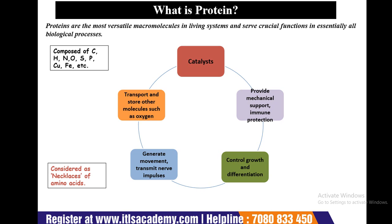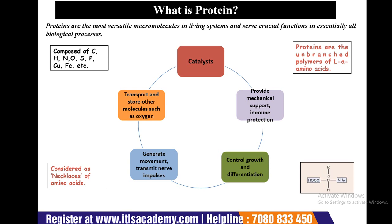Proteins also generate movement, transmit nerve impulses, and are responsible for controlling growth and differentiation. In general, proteins are composed of carbon, hydrogen, nitrogen, oxygen, sulfur, phosphorus, copper, iron, etc. They are considered unbranched polymers of alpha-amino acids — also described as a necklace of amino acids. The nitrogen content is around 16% of the molecular weight of a protein, with very small amounts of sulfur and phosphorus. Some proteins contain iodine, copper, manganese, zinc, and iron.